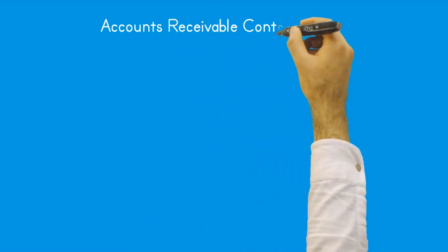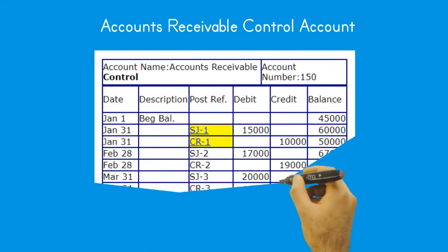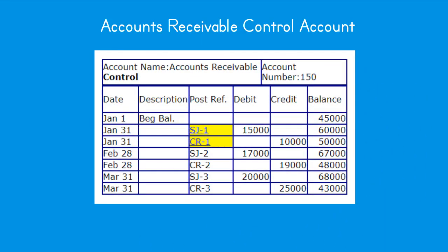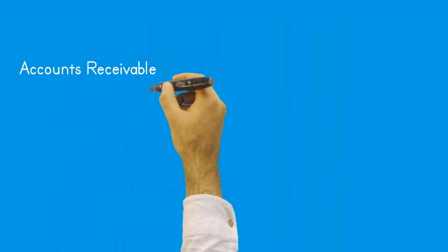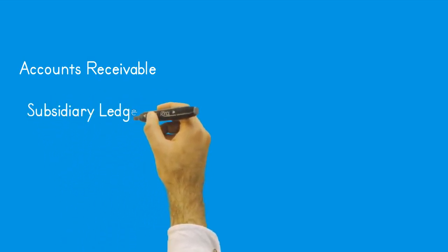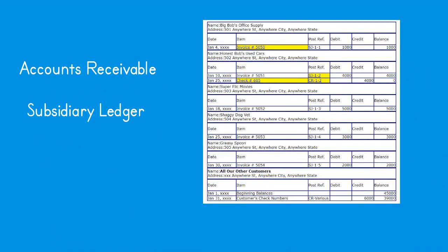General ledger accounts receivable control account. A control account is a general ledger account that provides a summarized balance of the detailed balances of the individual records maintained in a subsidiary ledger. Summary entries are posted from both the sales and cash receipts journals to the accounts receivable control account. The accounts receivable subsidiary ledger's purpose is to provide detail information about transactions summarized in the accounts receivable control account. Both the sales and cash receipts journals provide information needed for maintaining the accounts receivable subsidiary ledger.